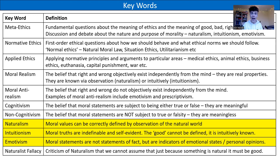Let's get started with the keywords. Our first keyword is meta-ethics, because this is the area of ethics where we take that step back and take that bird's eye view. It's where we ask fundamental questions about the meaning of ethics itself and, in particular, the meaning of good — what is good, what is right, what is wrong. So it is all about this fundamental key question.